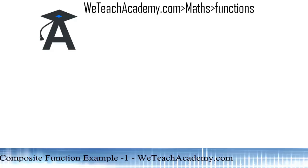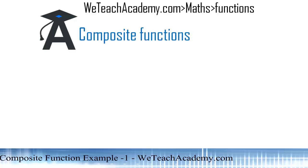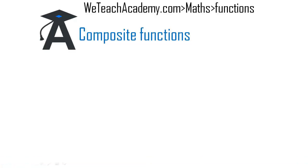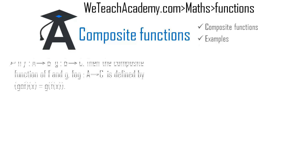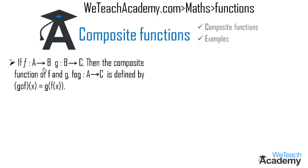Welcome to vtchecademy.com. In this presentation we are going to solve a few examples on composite functions. First let us learn the definition of composite functions. If f is a function from A to B and g is a function from B to C, then the composite function g circle f, from A to C, is defined as g of f of x.